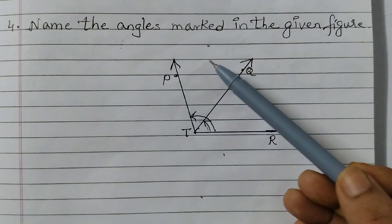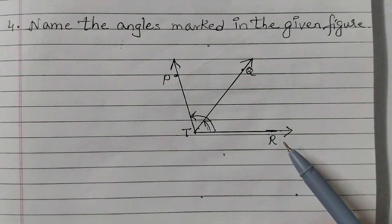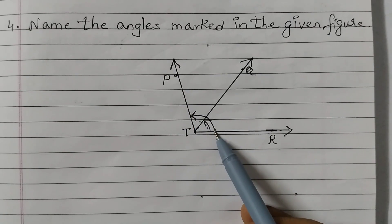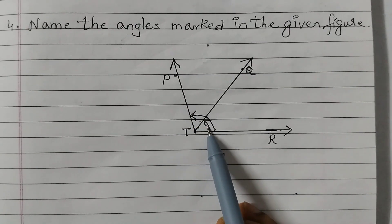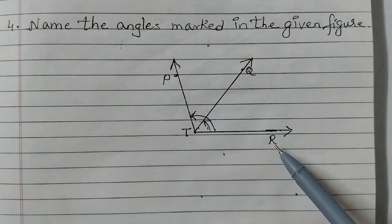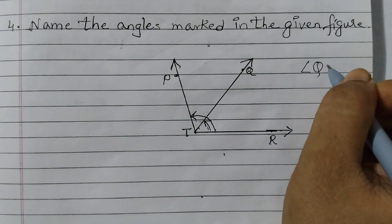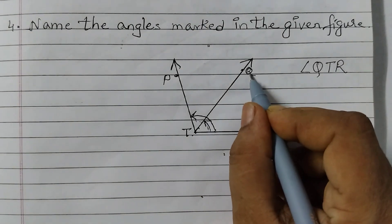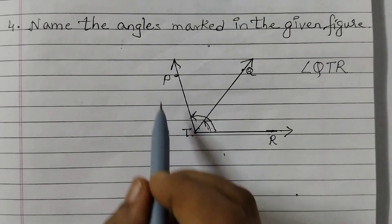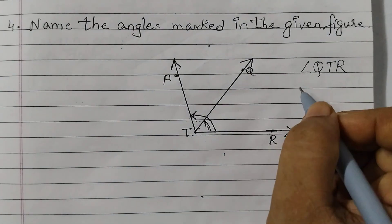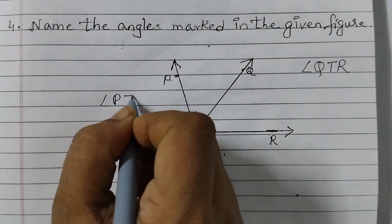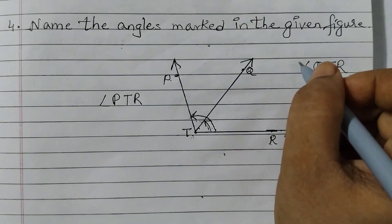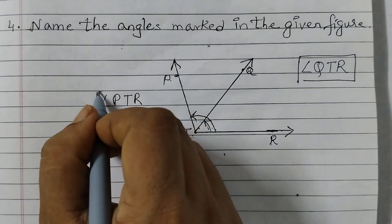Question number 4: name the angles marked in the given figure. We have a figure with a small curve here and one more curve here, so we have 2 angles to name. The smaller angle is QTR — we can say angle QTR or angle RTQ; both answers are correct. For the other curve, the angle is PTR — we can write angle PTR or angle RTP. So the 2 angles are QTR and PTR.